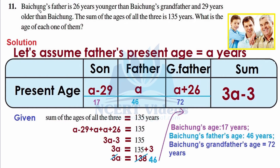Question number 11. Baichung's father is 26 years younger than Baichung's grandfather and 29 years older than Baichung. The sum of the ages of all three is 135 years. What is the age of each of them?